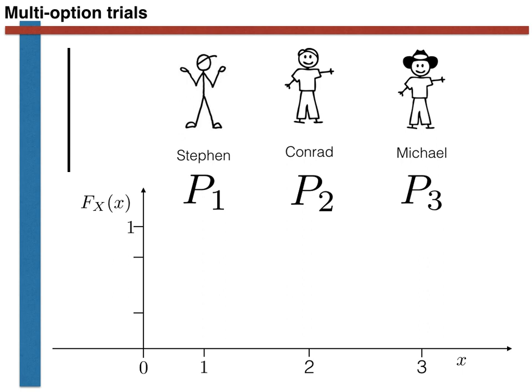Here is an example of a trial that can have three possible outcomes. We are picking a person — either Stephen, Conrad, or Michael — at random. The probability that we pick Stephen is p1, the probability that we pick Conrad is p2, and the probability that we pick Michael is p3. We will use numbers to denote these outcomes: if we pick Stephen, our random variable takes a value of one; if we pick Conrad, the value is two; and if we pick Michael, the value is three.